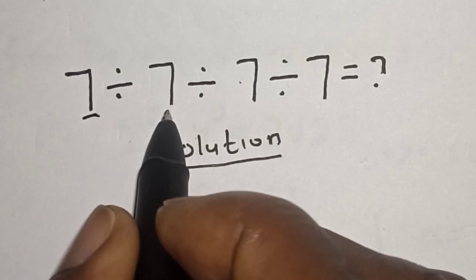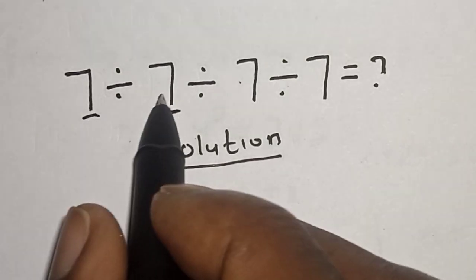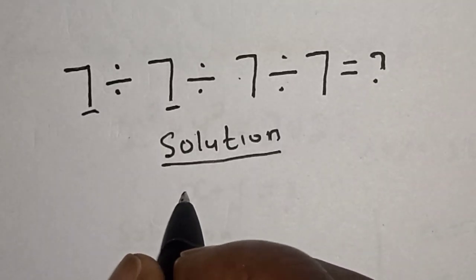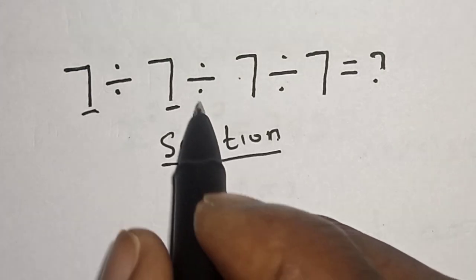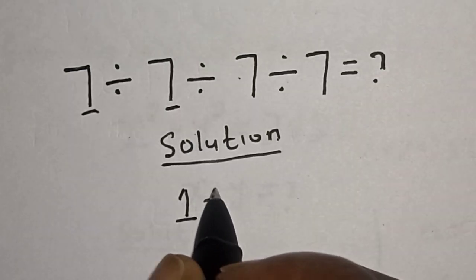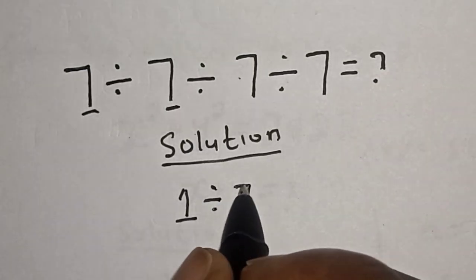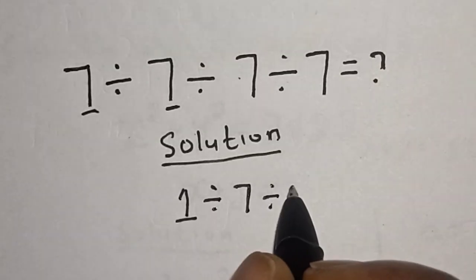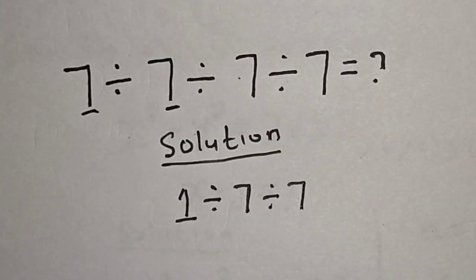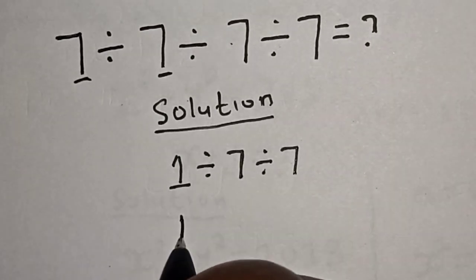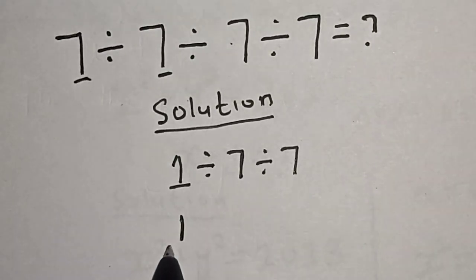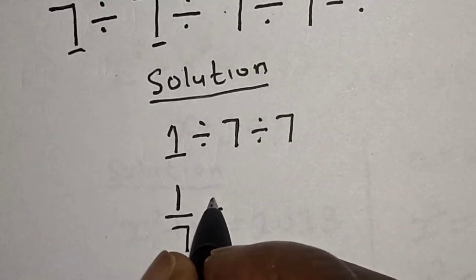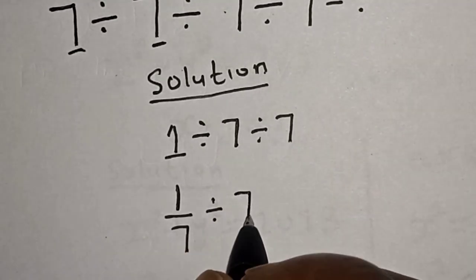Let's work with the first two first. Seven divided by seven is equal to one. Then we have divided by seven, then divided by another seven. So this is one divided by seven, divided by another seven.